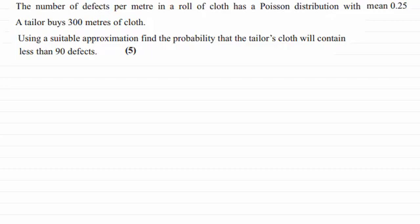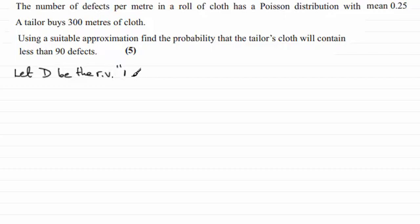Okay, welcome back then if you had a go. So first of all, what I'd want to do is to define a random variable. And that random variable we'll call D. Let D be the random variable representing the number of defects per 300 metres.